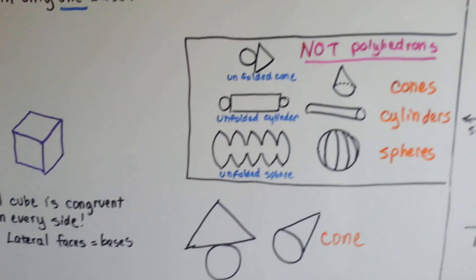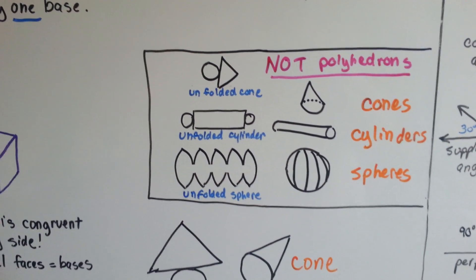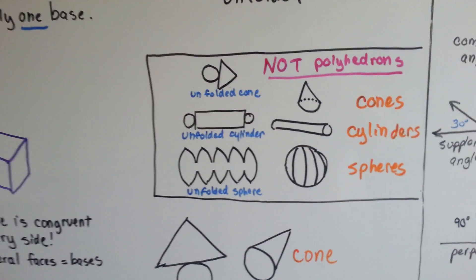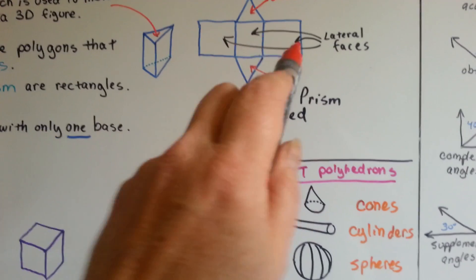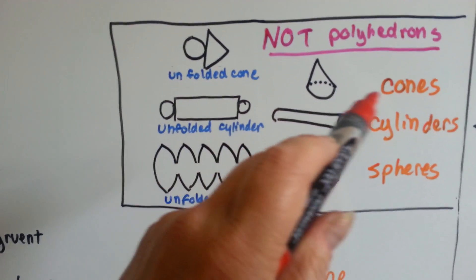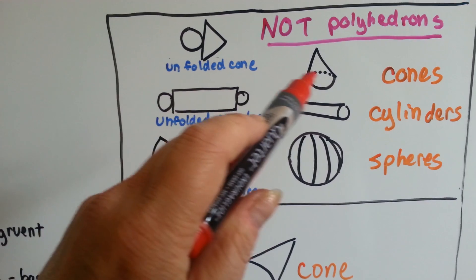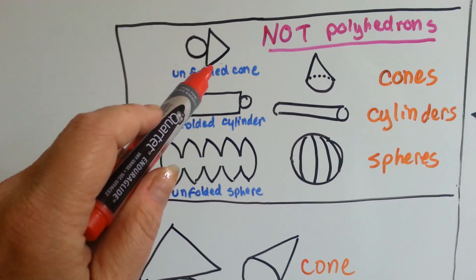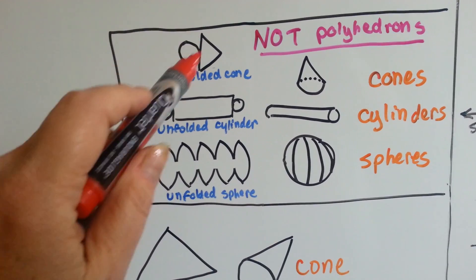Now, there's some shapes that are not polyhedrons, because they don't have rectangular sides like this. A cone, like a birthday hat or a cone coffee filter, is a triangle with a circle for its base.